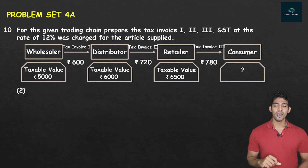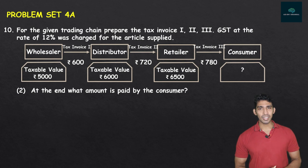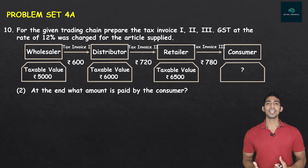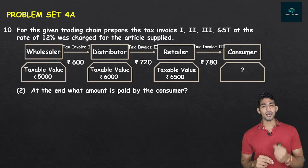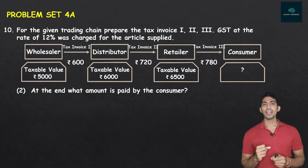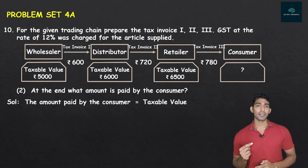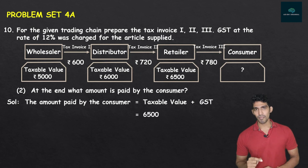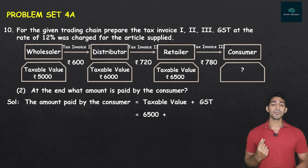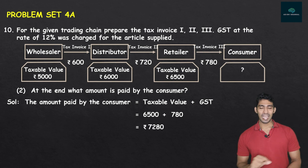The second sub-question: what amount is paid by the consumer? The consumer buys from the retailer at taxable value Rs. 6,500, plus GST of Rs. 780. So the total amount paid by the consumer = 6,500 + 780 = Rs. 7,280.